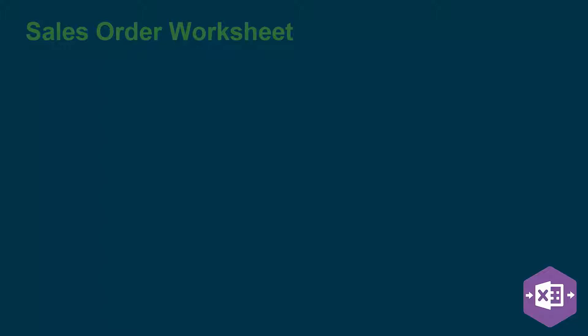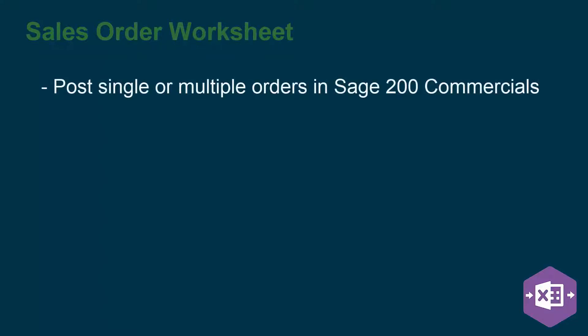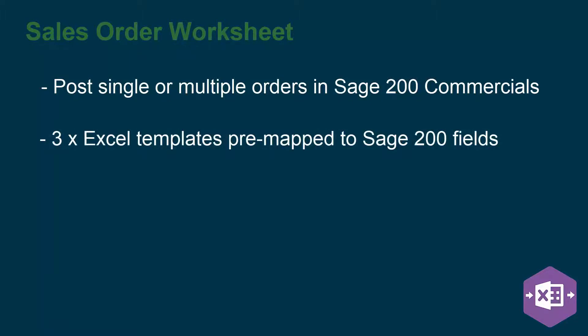The Sales Order Worksheet in Excel DataBridge enables you to post either single or multiple sales orders in Sage 200, providing you have the Sage 200 Commercials module. With the Sales Order Worksheet come three Excel templates which are pre-mapped to the relevant fields in Sage 200. These templates allow you to create your sales orders immediately, saving your time and effort as you won't need to create Excel spreadsheets manually and map them to the Sage 200 fields yourself.